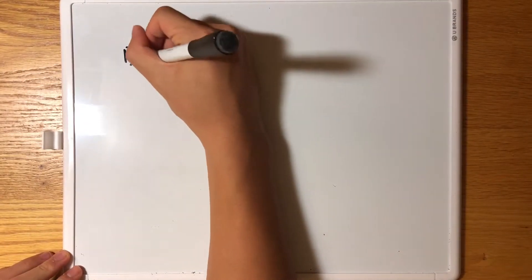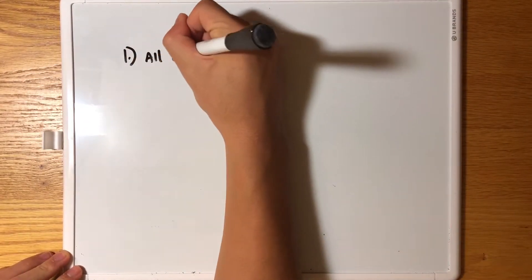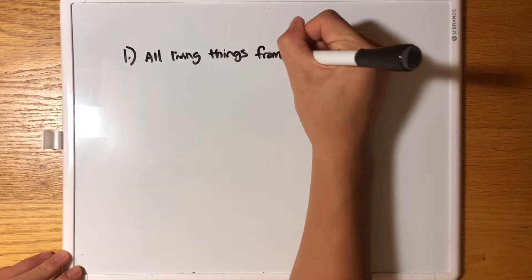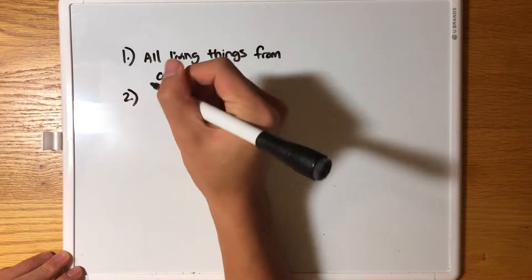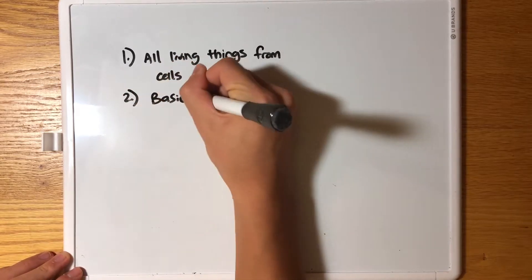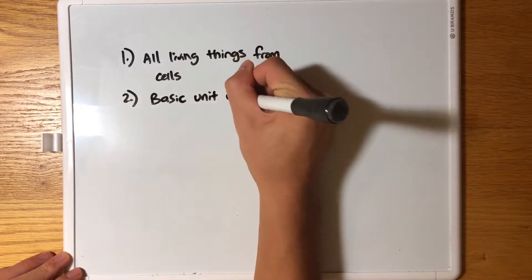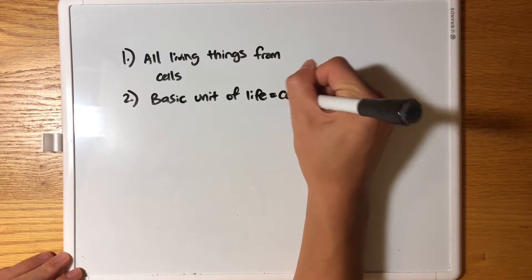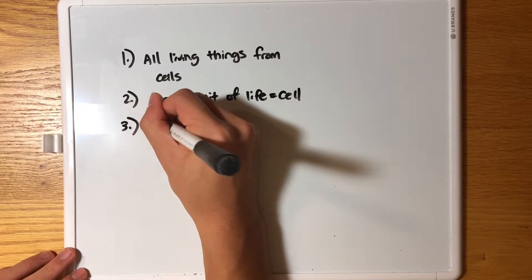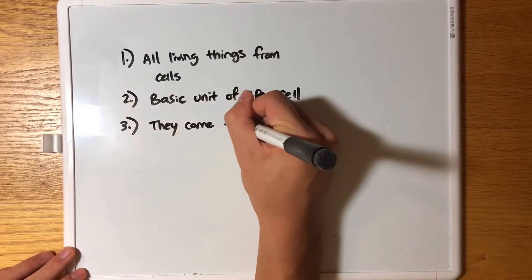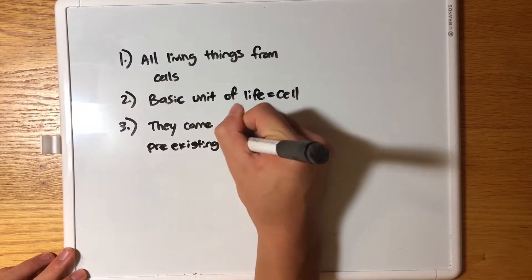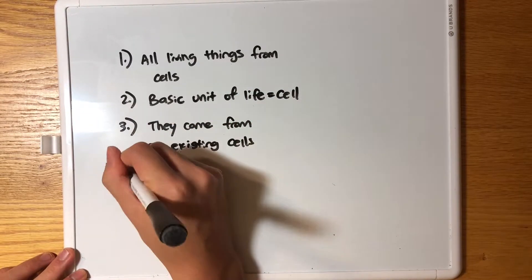This is just a short video on how to remember the cell theory. Number one: all living things come from cells. Number two: cells are the basic unit of life. Number three: all cells have to come from pre-existing cells.